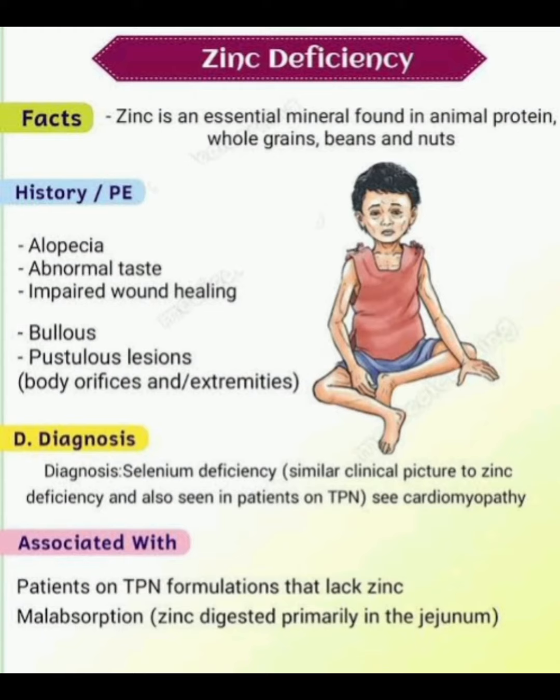Clinical features include abnormal taste, impaired wound healing, and bullous/pustular lesions at body orifices and extremities. For diagnosis, selenium deficiency presents a similar clinical picture to zinc deficiency and is also seen in patients on total parenteral nutrition — note the associated cardiomyopathy. Zinc deficiency is also associated with total parenteral nutrition formulations that lack zinc, and with malabsorption, as zinc is digested primarily in the jejunum.